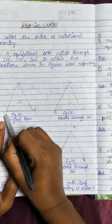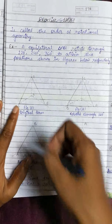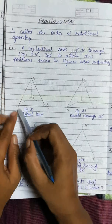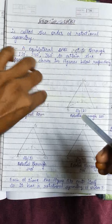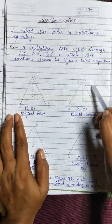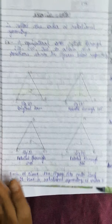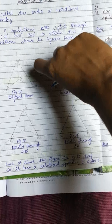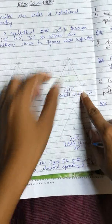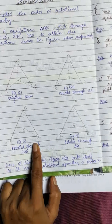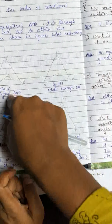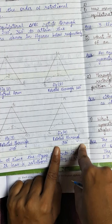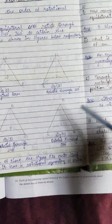When we rotate the equilateral triangle 120 degrees, the point C moves to a new position but the triangle fits onto itself. When rotated 240 degrees, C moves again to another position and the triangle again fits. At 360 degrees — a complete rotation — the triangle returns to its original position.